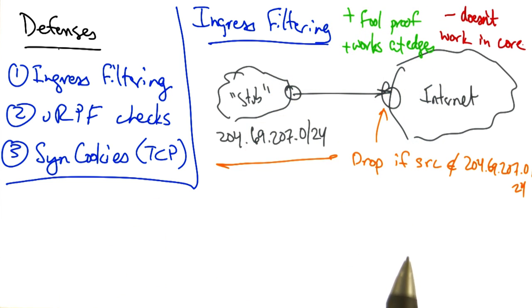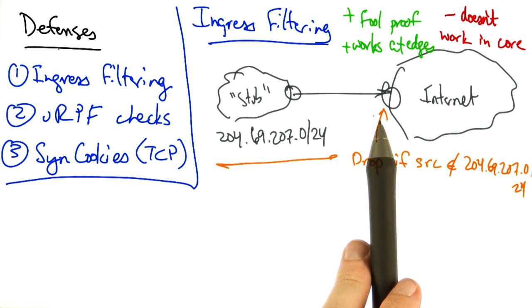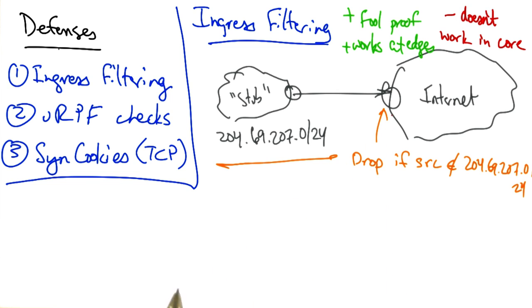Unfortunately, it doesn't work well in the core, where a particular router might have a lot of difficulty determining whether packets from a particular source IP address could be allowed on a particular incoming interface.